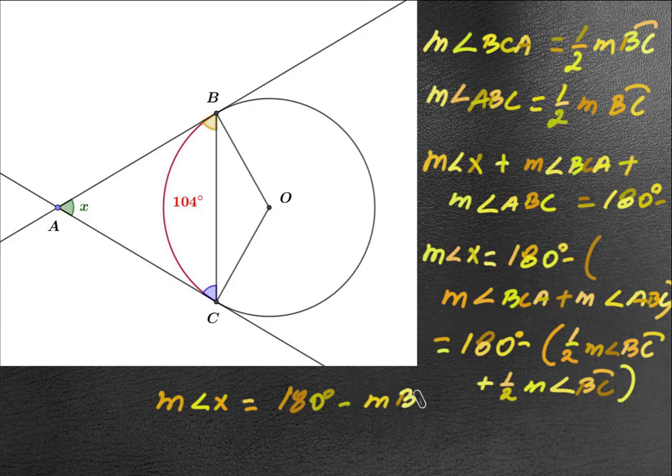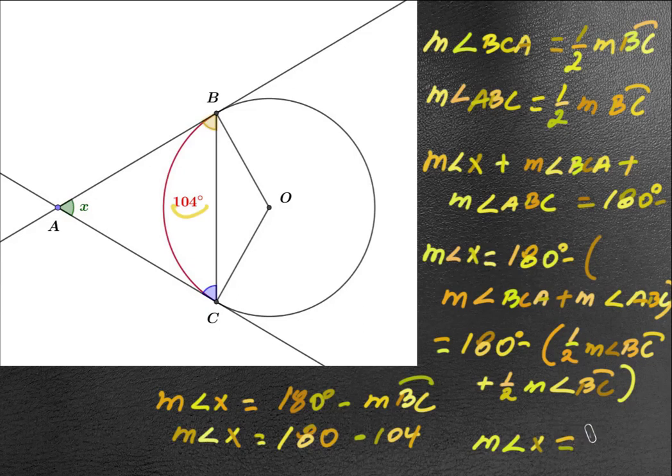measure of angle X is equal to 180 degrees minus the measure of BC. This is a formula we could use. Every time you have this type of situation, you just subtract from 180 degrees. So that means measure of angle X is equal to 180 minus 104, that is 76 degrees.